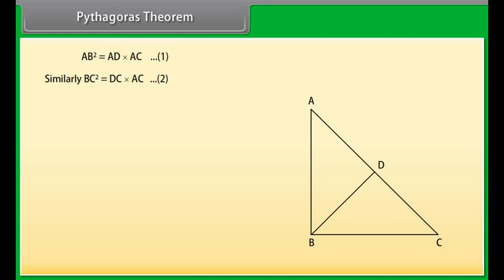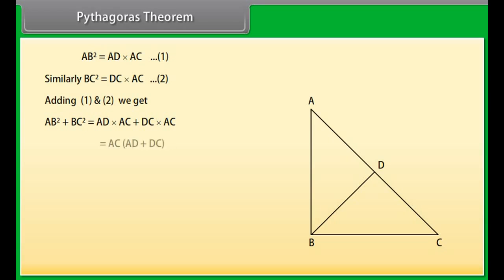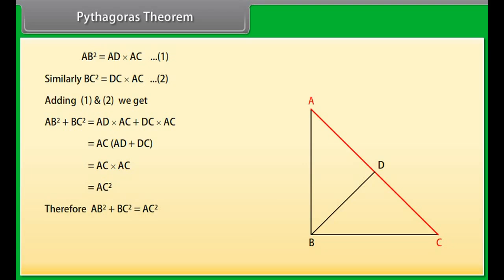Similarly, BC² equals DC times AC (equation 2). Adding equations 1 and 2: AB² plus BC² equals AD times AC plus DC times AC, which equals AC times (AD plus DC), which equals AC times AC, which equals AC². Therefore AB² plus BC² equals AC². Hence proved.